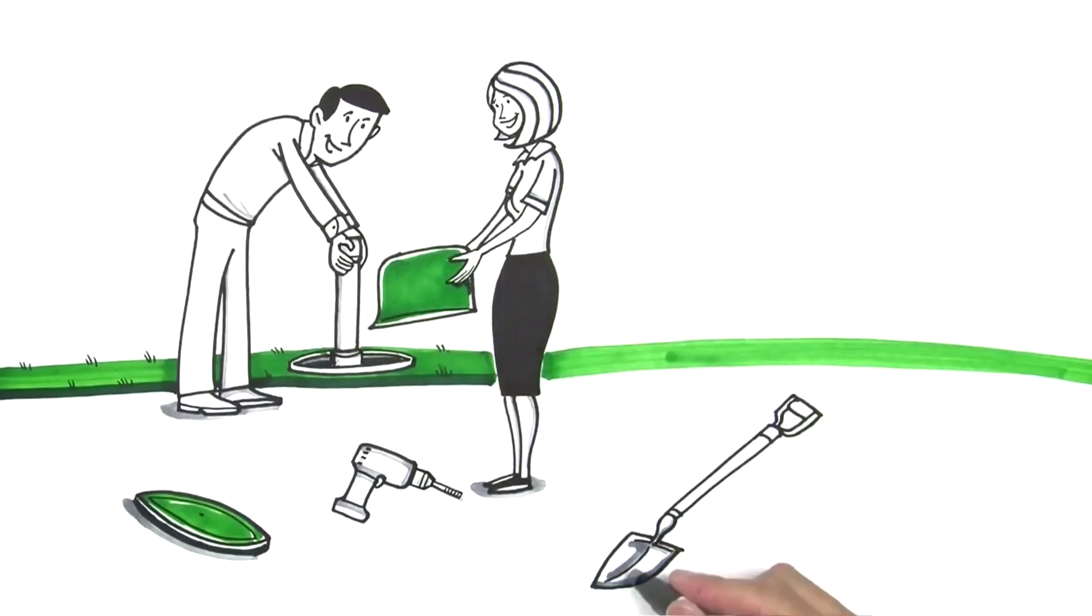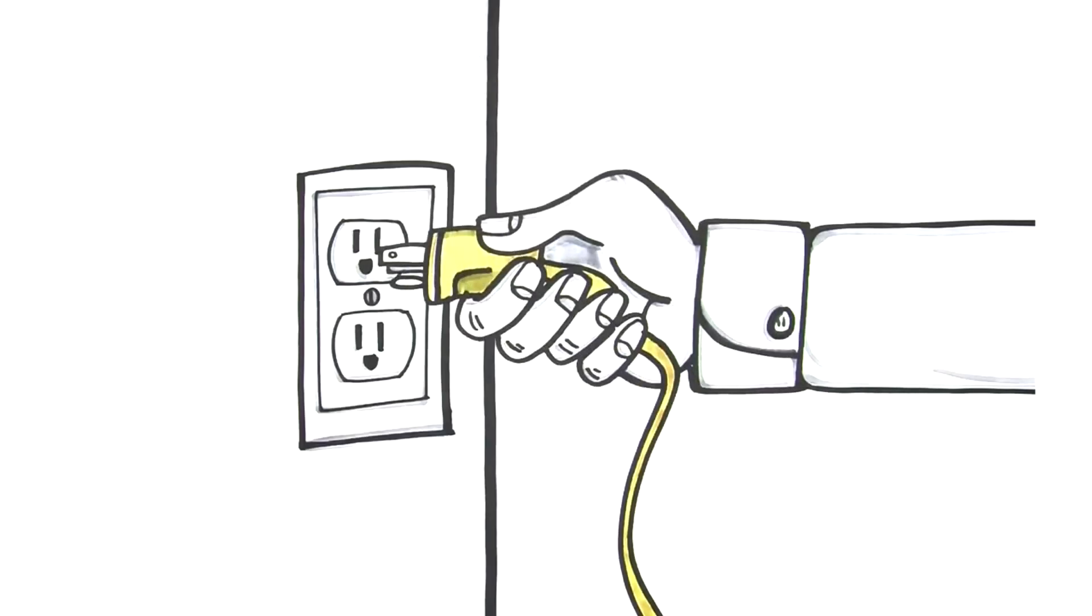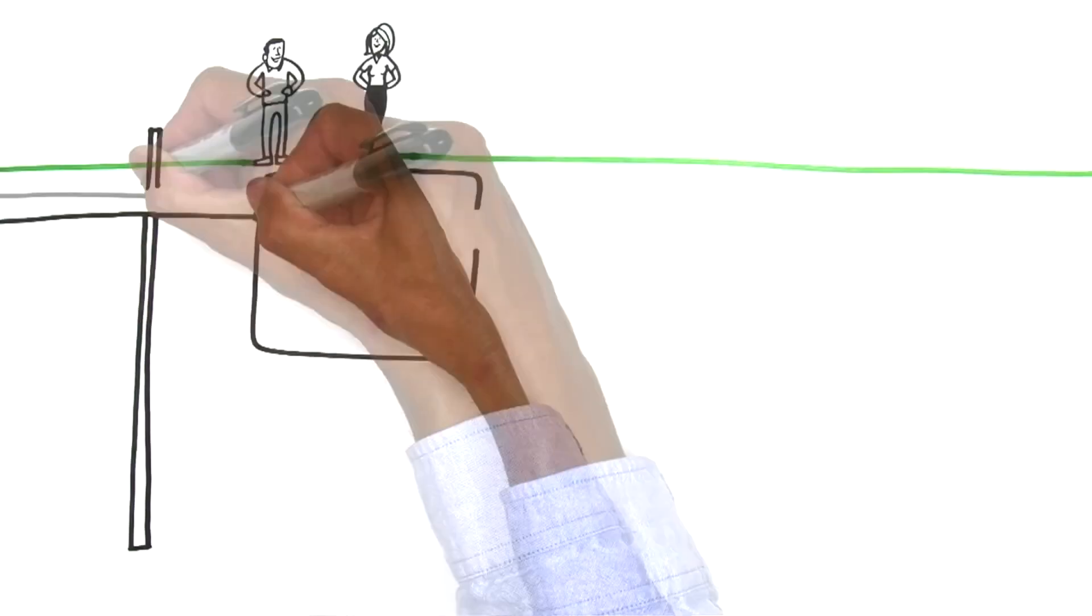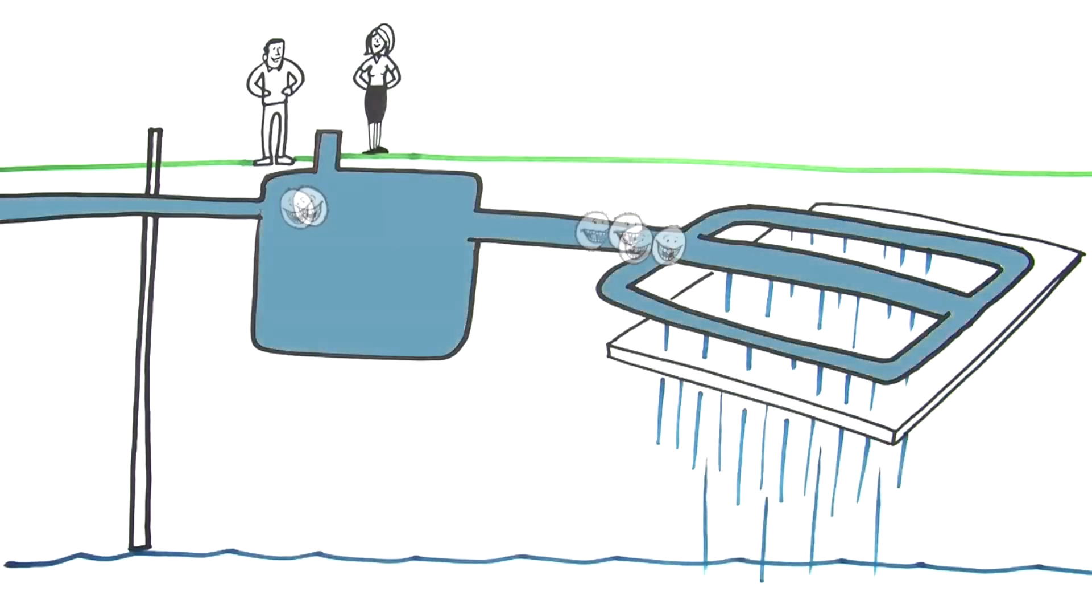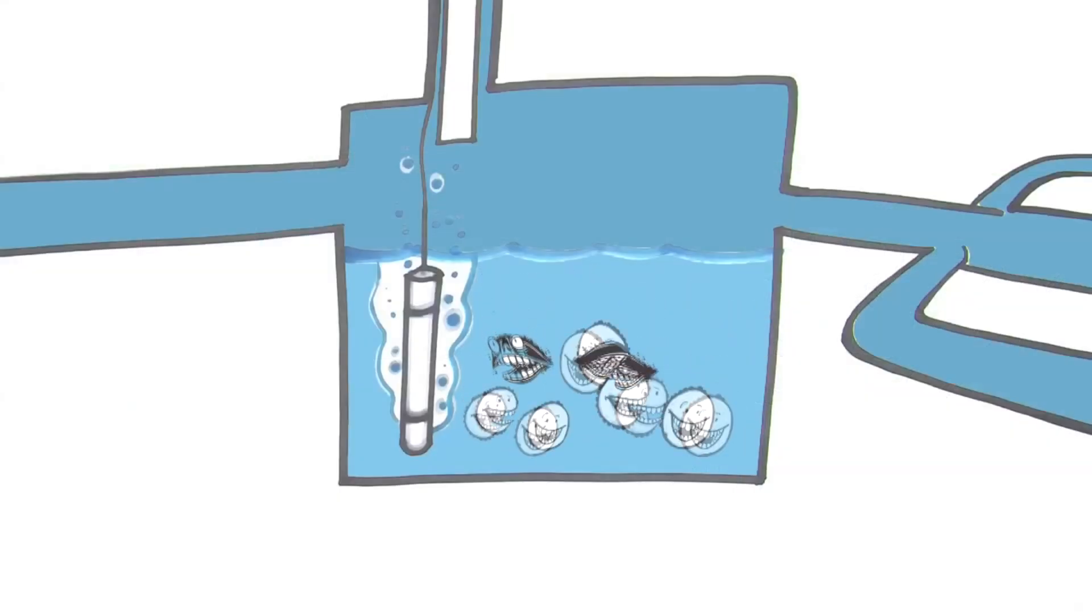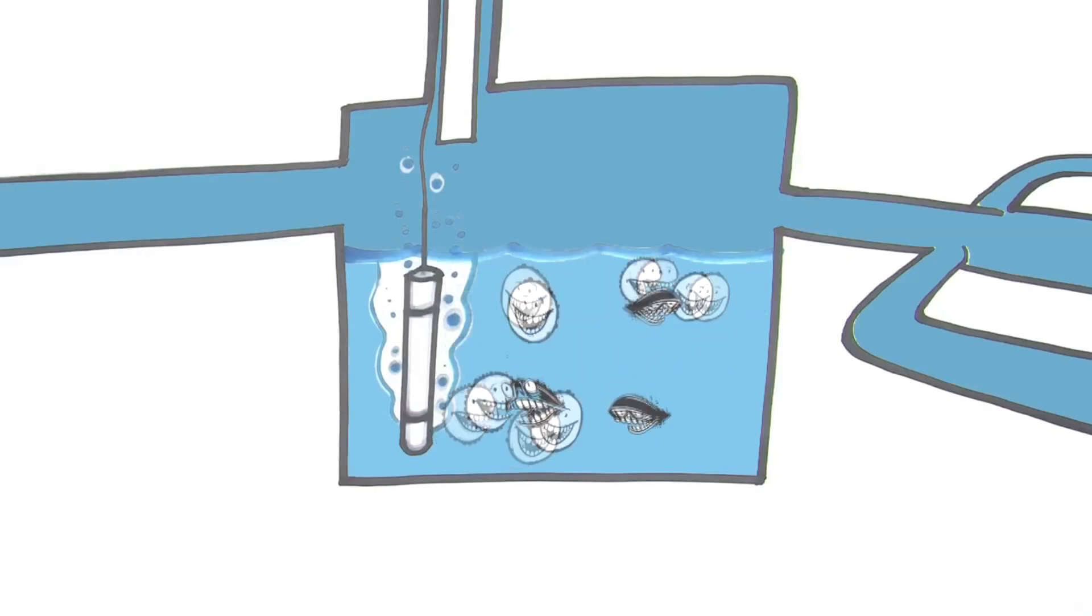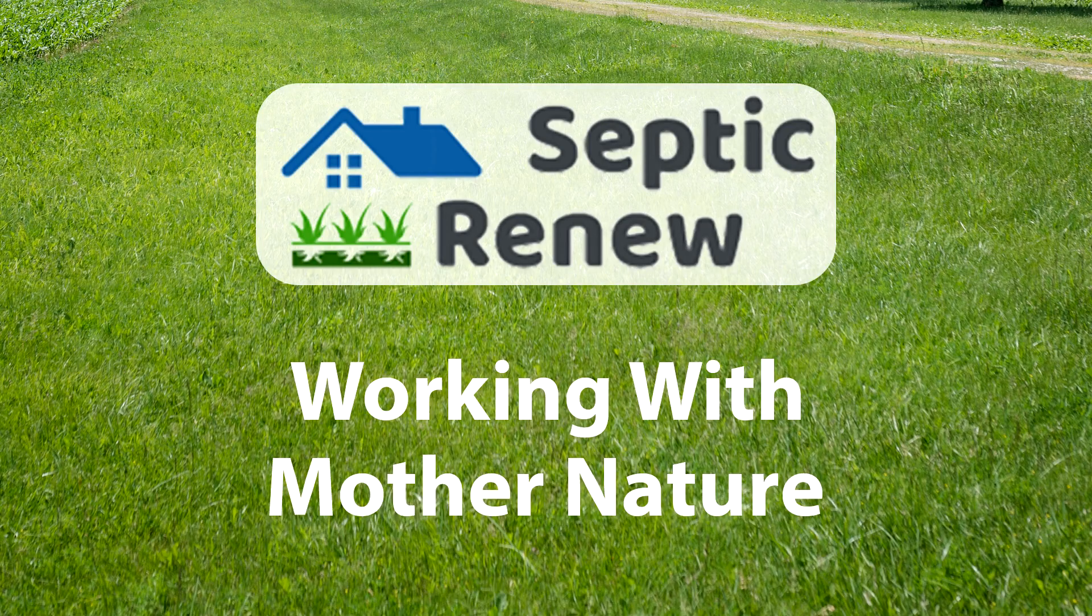By installing a remediator and introducing aerobic bacteria, your septic system springs back to life. These bacteria get to work immediately, generating more of their kind and consuming all the waste in your septic system, including the problematic biomat. In the end, your septic system is revived, you regain the comfort of your home, and save a significant amount of money in the process.